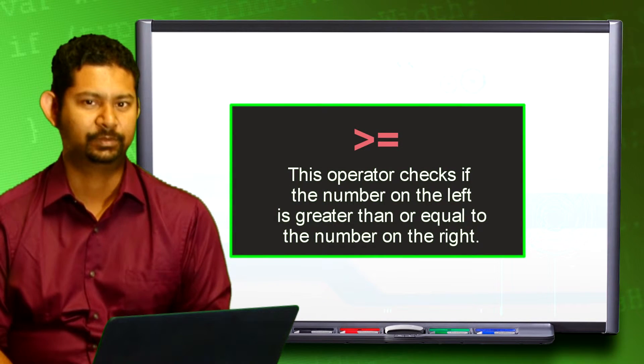Greater than equal to. This operator checks if the number on the left is greater than or equal to the number on the right.